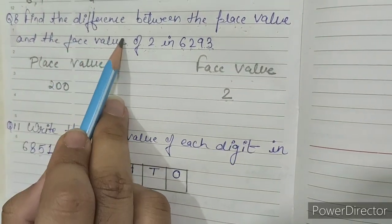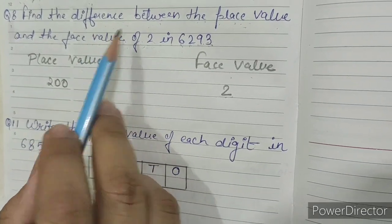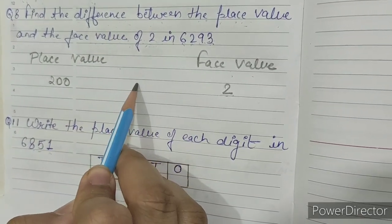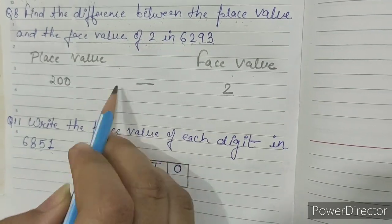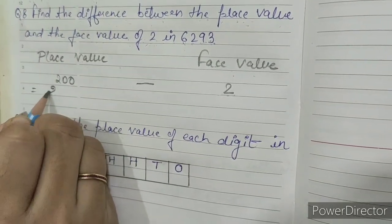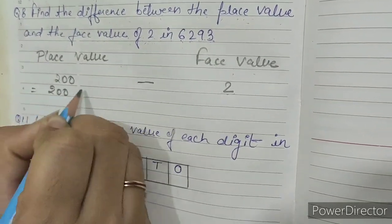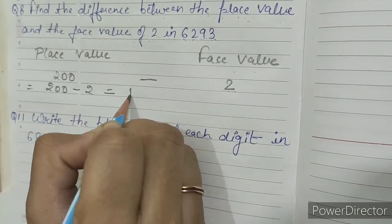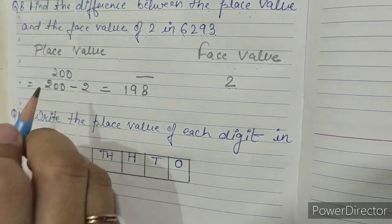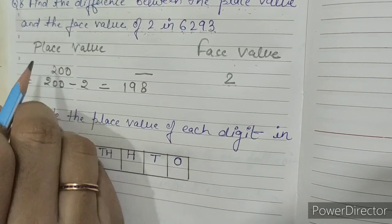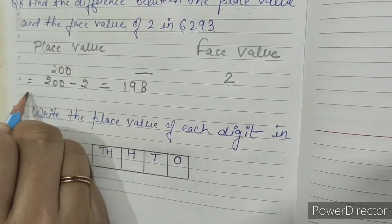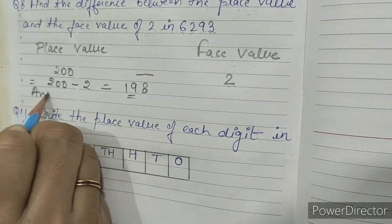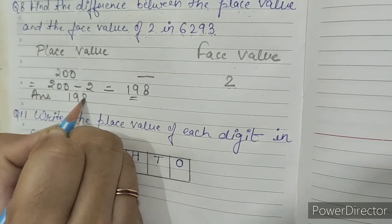So in this question we have to find out the difference between place value and face value. So 200 minus 2 equals 198. The difference between place value and face value is 198. Our answer is 198.